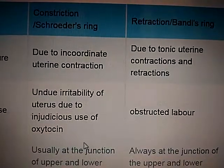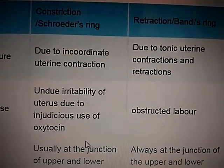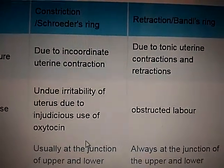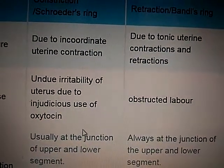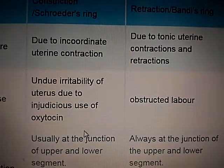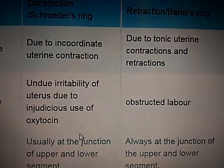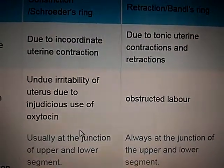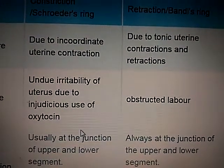Regarding the location of the ring: the location of Schroeder's ring is usually at the junction of the upper and lower uterine segment, while the location of the retraction ring is always at the junction of the upper and lower segment.